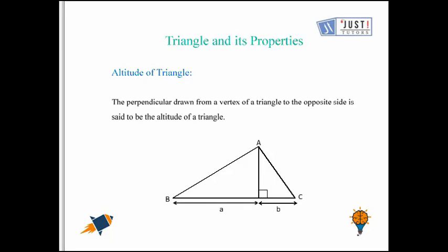Let's look at Altitude of a Triangle. If we have Altitude of a Triangle, we can choose any vertex. Basically, if we talk about point A, we draw a perpendicular line from A to the opposite side. This will be the Altitude of this triangle.